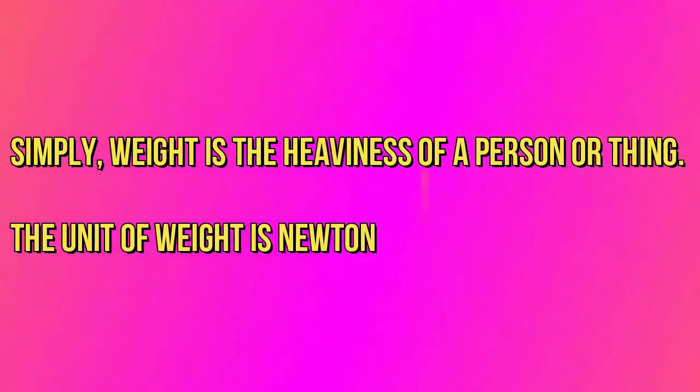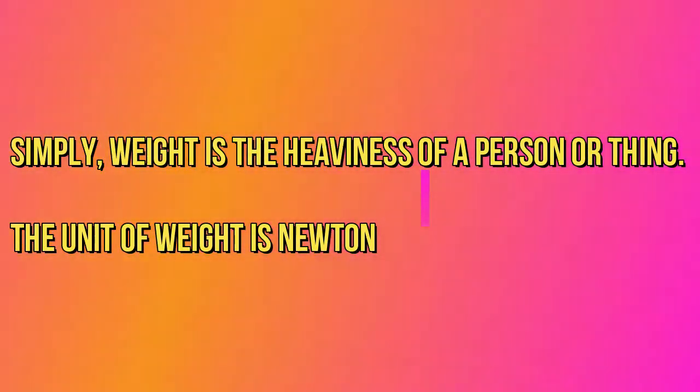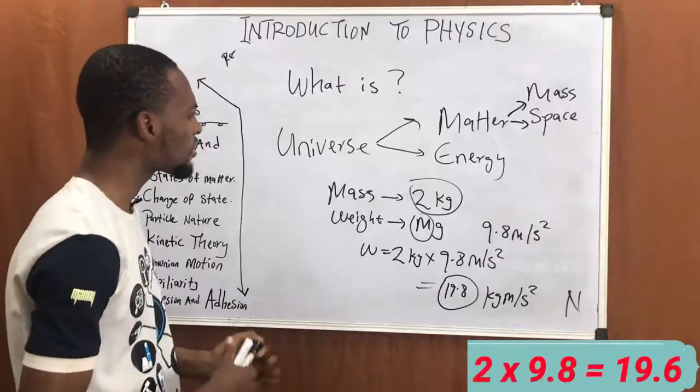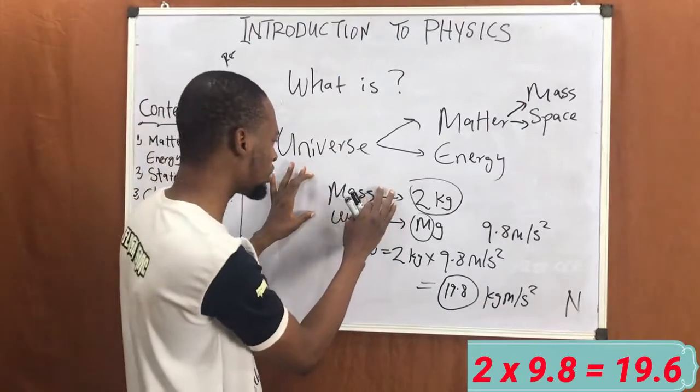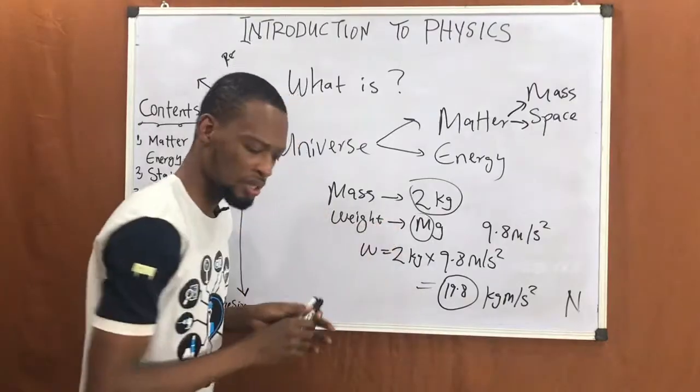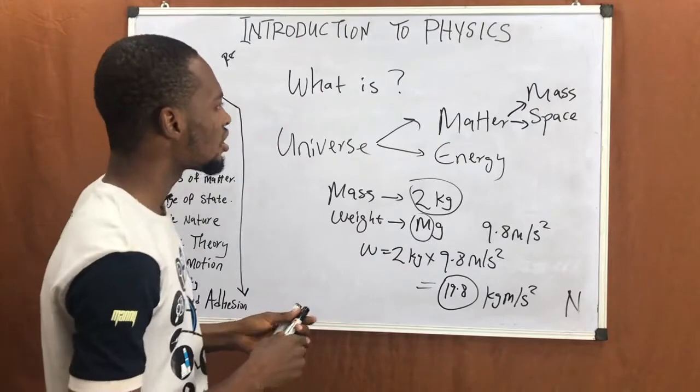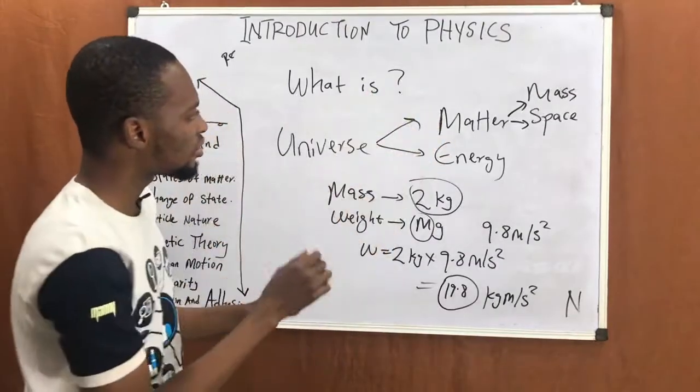We'll really go into all these things and start calculations. In definition, you can say mass is the quantity of matter a body possesses, while weight is the Earth's pull on a body.